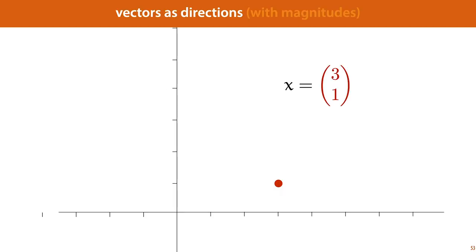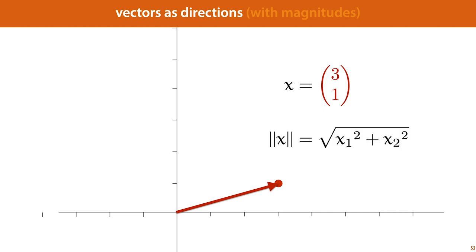First, what we need to do is look at vectors not just as points in space, as we've done so far, but as directions. So the vector (3, 1) indicates a direction — the direction from the origin to that point. That's a direction together with a magnitude, because we can compute the length of this arrow. The magnitude of the vector is the length of the arrow, and the direction of the arrow is the direction we're interested in.